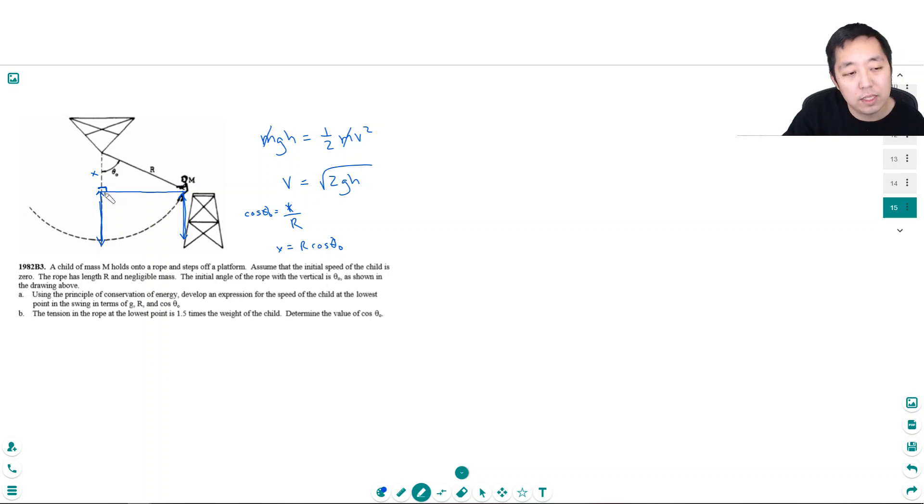But I don't want this length, I actually want this length. But because the whole length of this rope is r, this length here has got to be r minus x. So h is equal to r minus x, which is equal to r minus r cosine theta not.